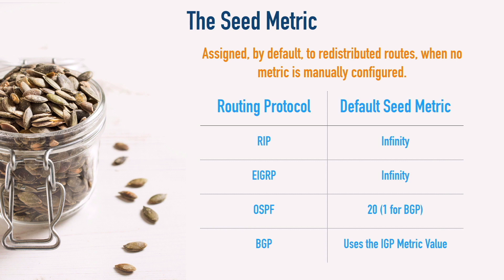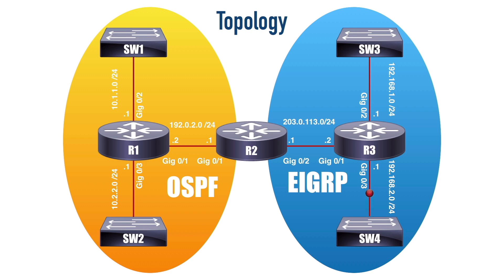BGP is a bit different — it's going to use whatever the initial interior gateway protocol metric was to begin with. Because BGP isn't looking at just a single metric; instead, it goes through a fairly lengthy process of different things it's going to check, like weight and local preference and several other things. And that's a look at the basic theory of route redistribution. Next, let's take a look at a configuration example of mutual route redistribution.